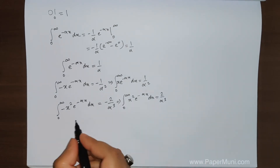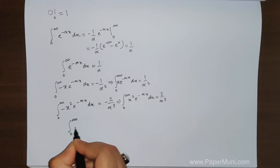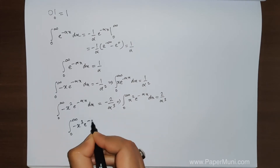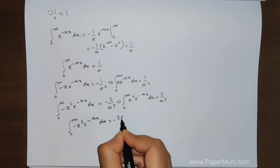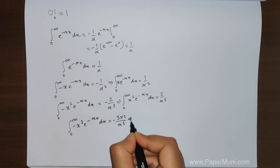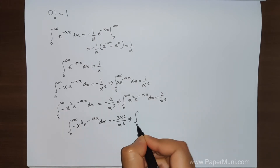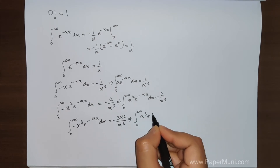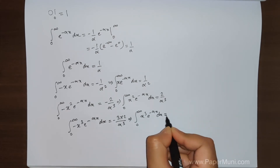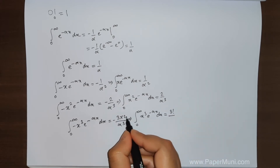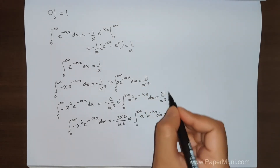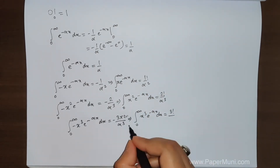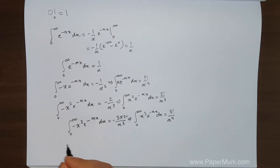Again we differentiate with respect to alpha. We get minus x cubed e to the power minus alpha x dx equals minus 3 times 2 over alpha to the 4th. Rearranging, we get the integral of x cubed e to the power minus alpha x dx equals 3 factorial over alpha to the 4th. Similarly, the previous results have 1 factorial and 2 factorial. So we can observe a general pattern forming.